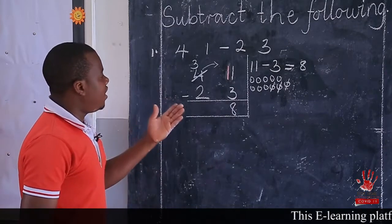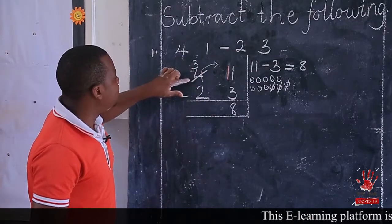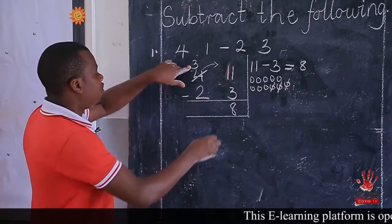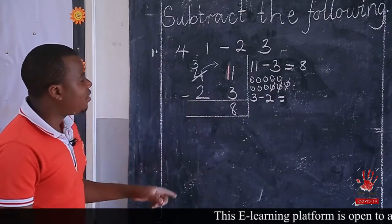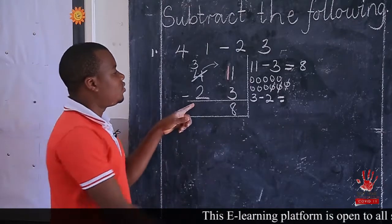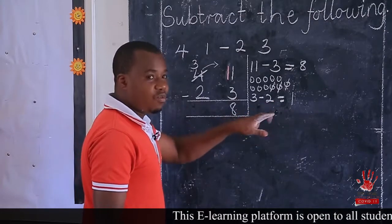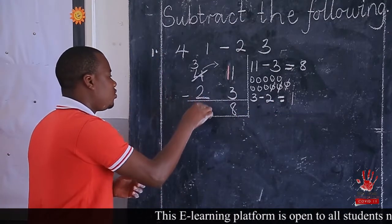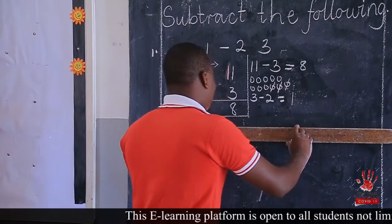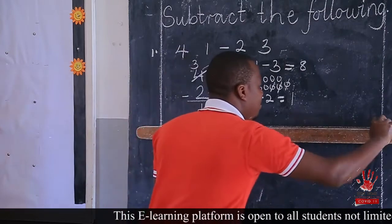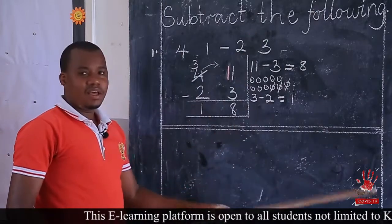Now remember, here you removed one 10. So you regrouped — it is no longer 4, it is now 3. So you will have 3 take away 2. What is 3 take away 2? Three take away 2 is 1. If you are not sure, draw the balls and remove 2. So 3 take away 2 is 1. Then after getting the answer, you are done. Come and double underline. That is it, and you are finished.